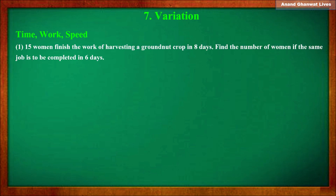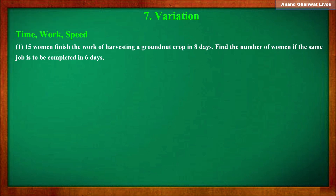The first word problem: 15 women finish the work of harvesting the groundnut crop in 8 days. Find the number of women if the same job is to be completed in 6 days. To solve these types of word problems using direct or inverse variation, let's make a chart of the given information and identify the two variables.